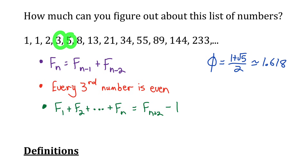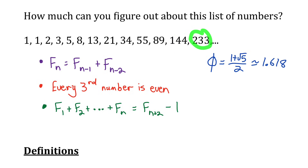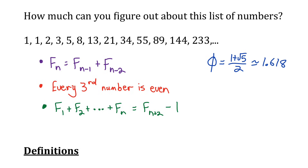Five divided by three is about 1.67. We can get a better approximation if we move further along the sequence. If you pick 233 and 144 and do 233 divided by 144, you get a number that approximates the golden ratio accurately to four decimal places. So using limit notation, we could say that the limit of Fibonacci number n plus one divided by Fibonacci number n, as n approaches infinity, is equal to the golden ratio phi.